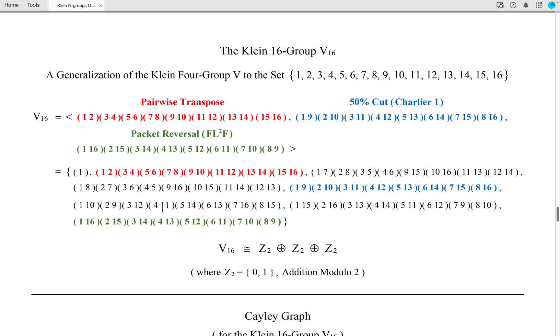The pairwise transpose, the 50% cut, and the packet reversal are the same physical shuffles except for the fact that there are 16 elements to work with this time instead of just 4 or instead of just 8.